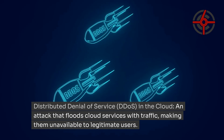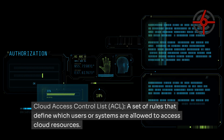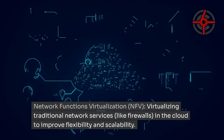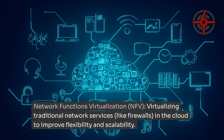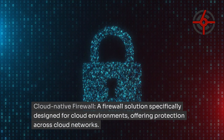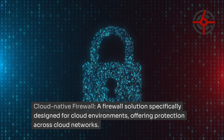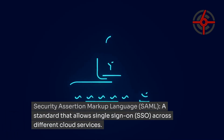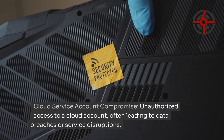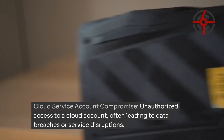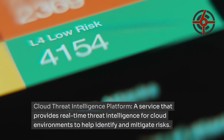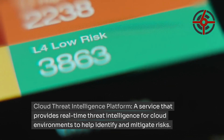Cloud Access Control List (ACL): a set of rules that define which users or systems are allowed to access cloud resources. Network Functions Virtualization (NFV): virtualizing traditional network services like firewalls in the cloud to improve flexibility and scalability. Cloud Native Firewall: a firewall solution specifically designed for cloud environments, offering protection across cloud networks. Security Assertion Markup Language (SAML): a standard that allows single sign-on (SSO) across different cloud services. Cloud Service Account Compromise: unauthorized access to a cloud account, often leading to data breaches or service disruptions. Cloud Threat Intelligence Platform: a service that provides real-time threat intelligence for cloud environments to help identify and mitigate risks.